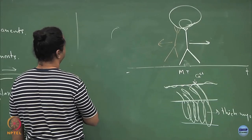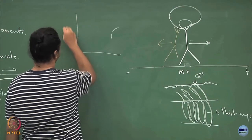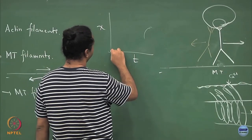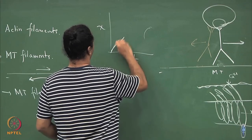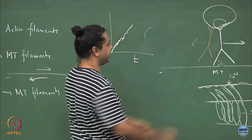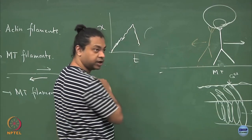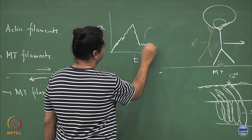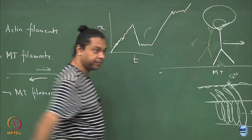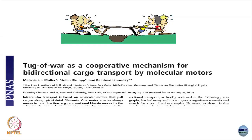If kinesins win, I move along the plus end. If at some point some kinesins unbind and dyneins win, I start walking in the other direction. If the forces are balanced there is no net motion. You will see some sort of stochastic trajectory. It is a tug of war between these oppositely directed motors — kinesins and dyneins — and what you ultimately see depends on the number of motors of each type bound at a given time.